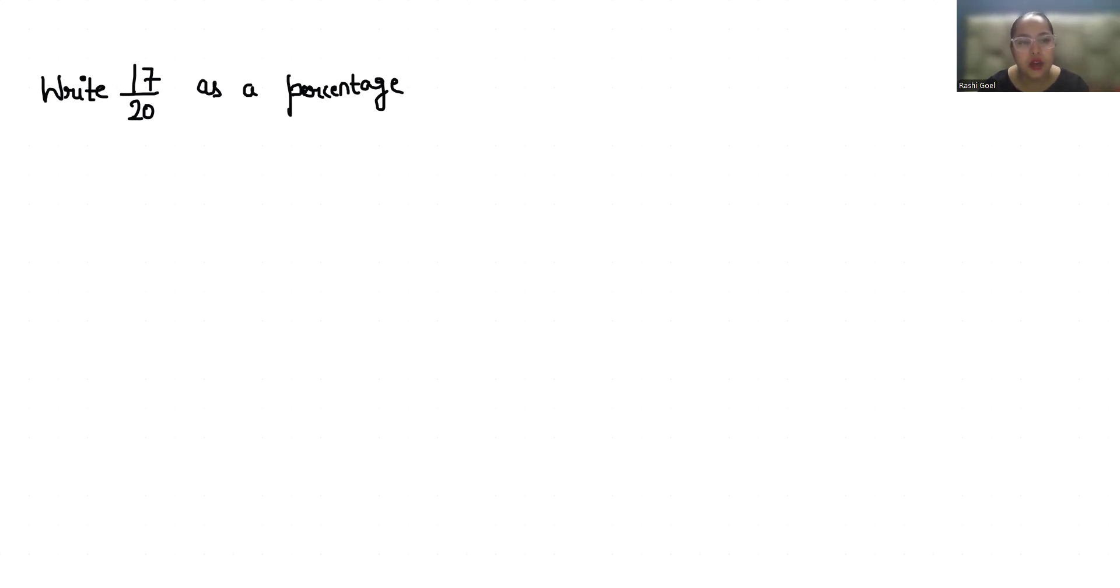So 17 by 20 is right now in fraction form and we have to write it in percentage form. This is the symbol of percentage. This symbol means the value is 1 by 100, that means there is a denominator of 100.